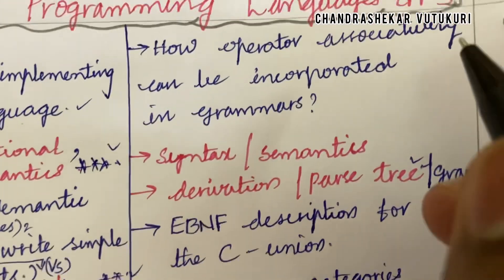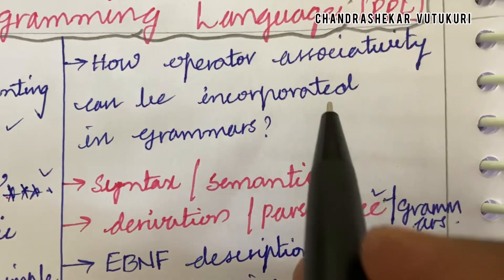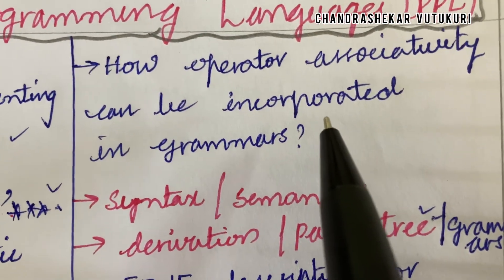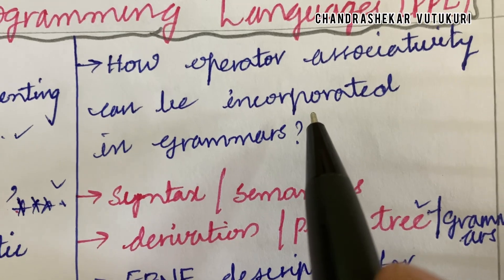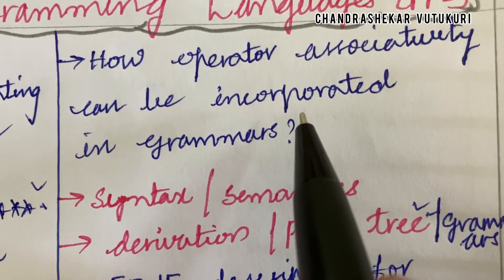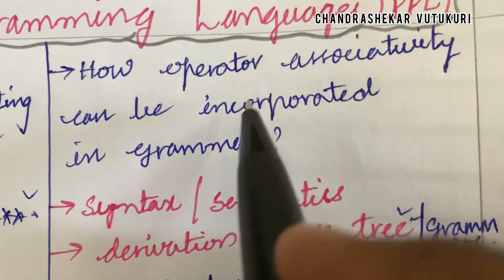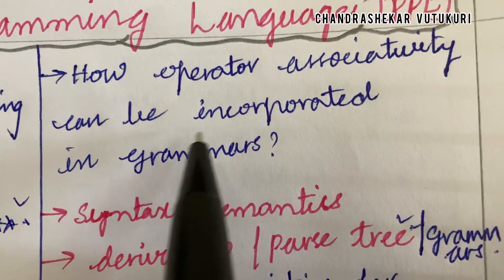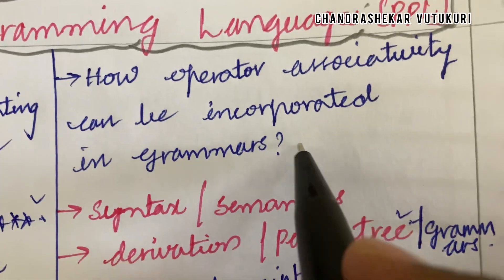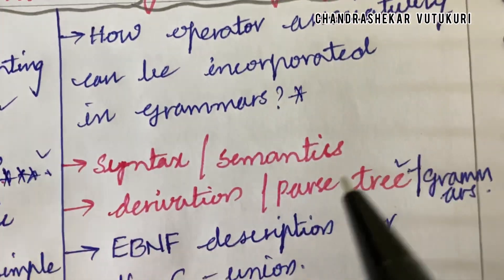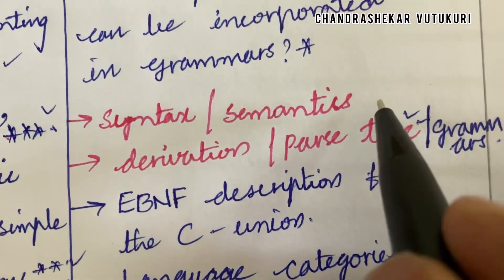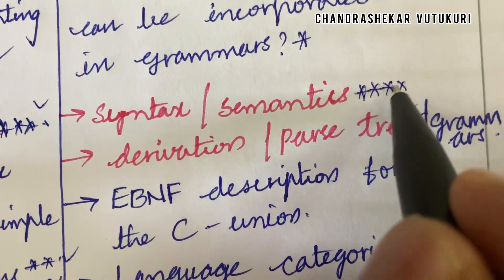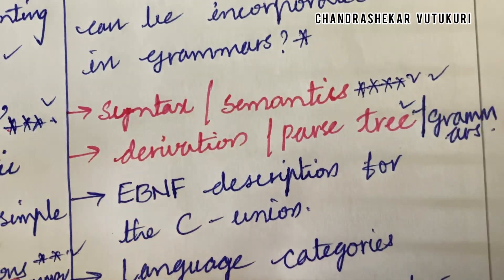If you haven't taken membership on my channel, please do it immediately, as you are going to receive very important questions. As per JNTU, how operator associativity can be incorporated in grammars, and syntax versus semantics, is said to be a topmost and sure-shot question for 2 marks.